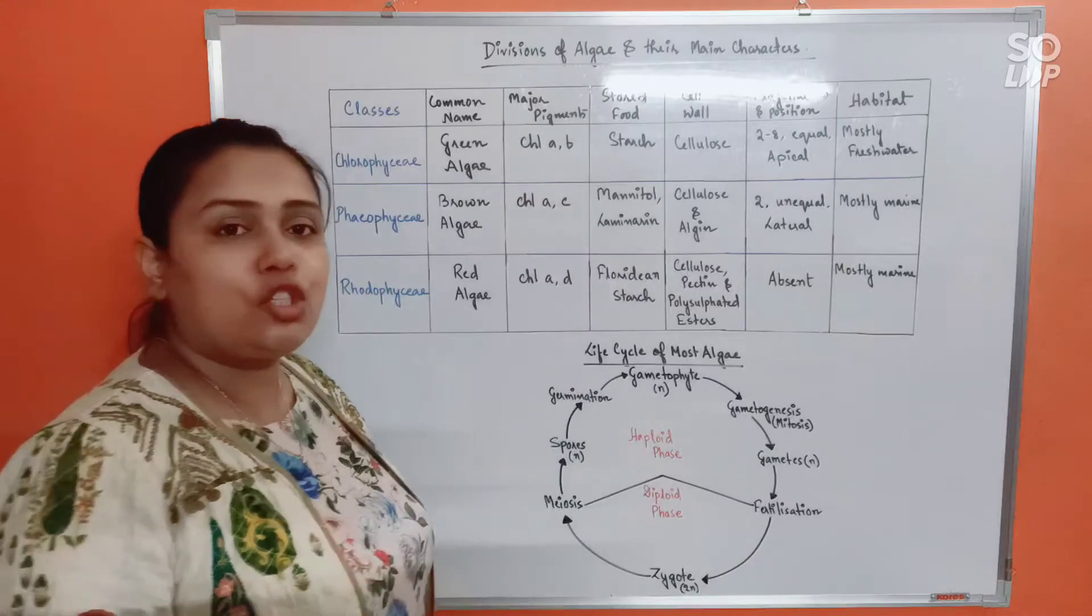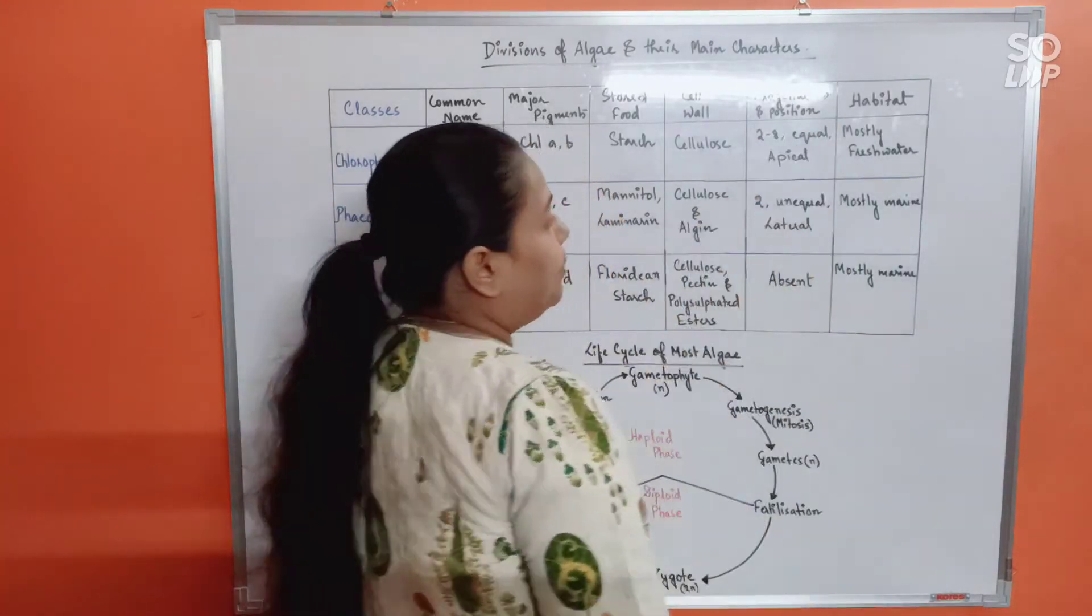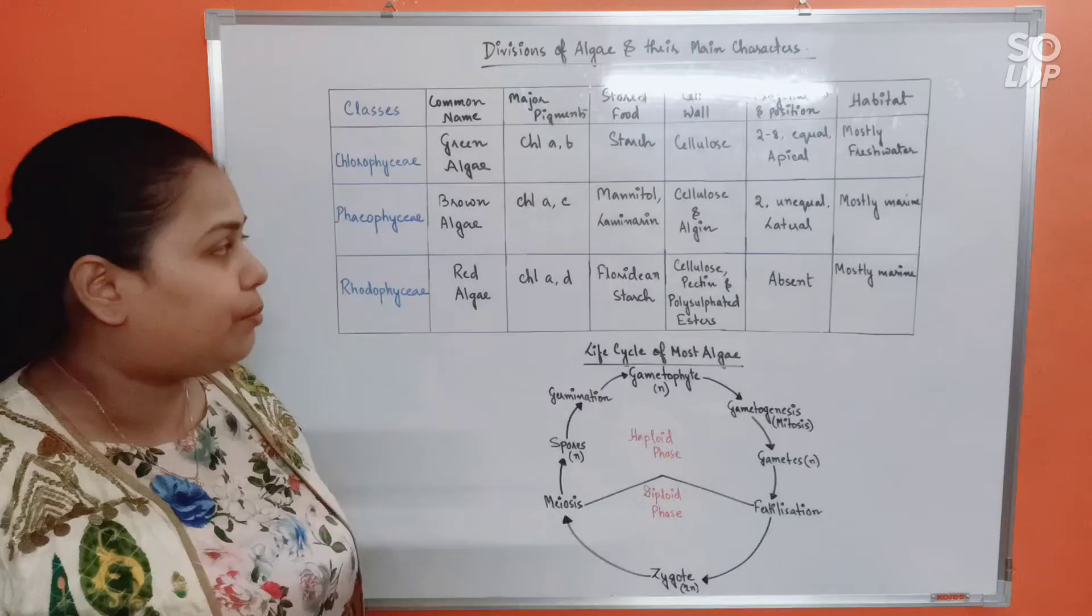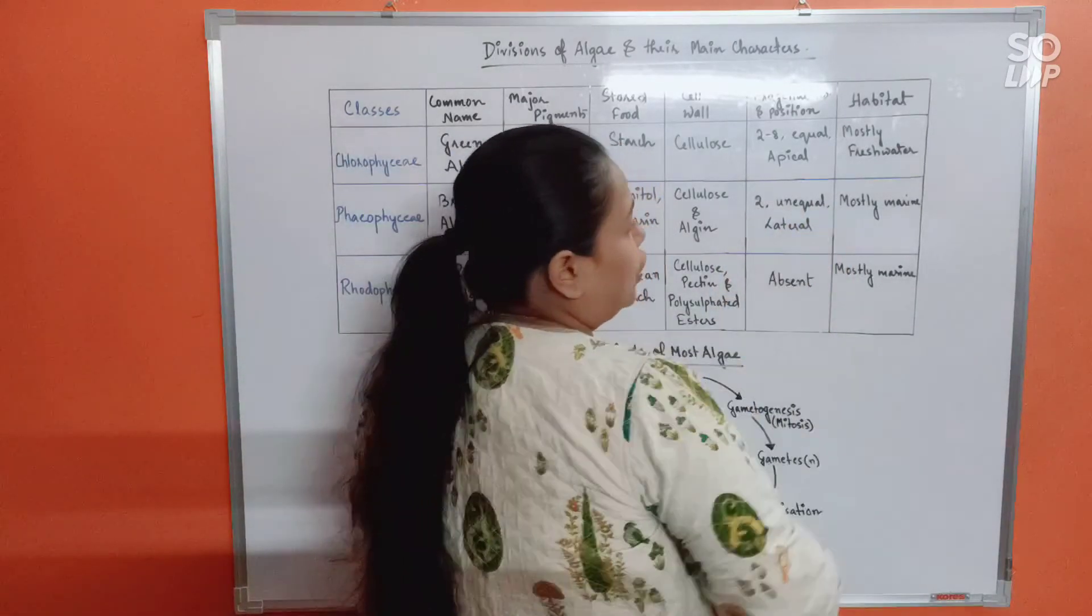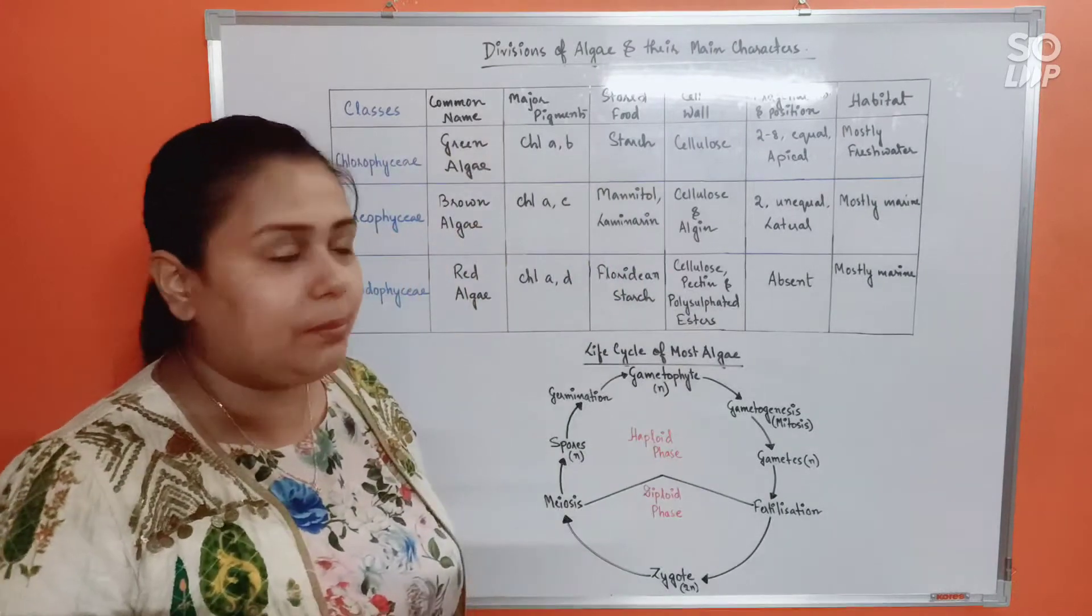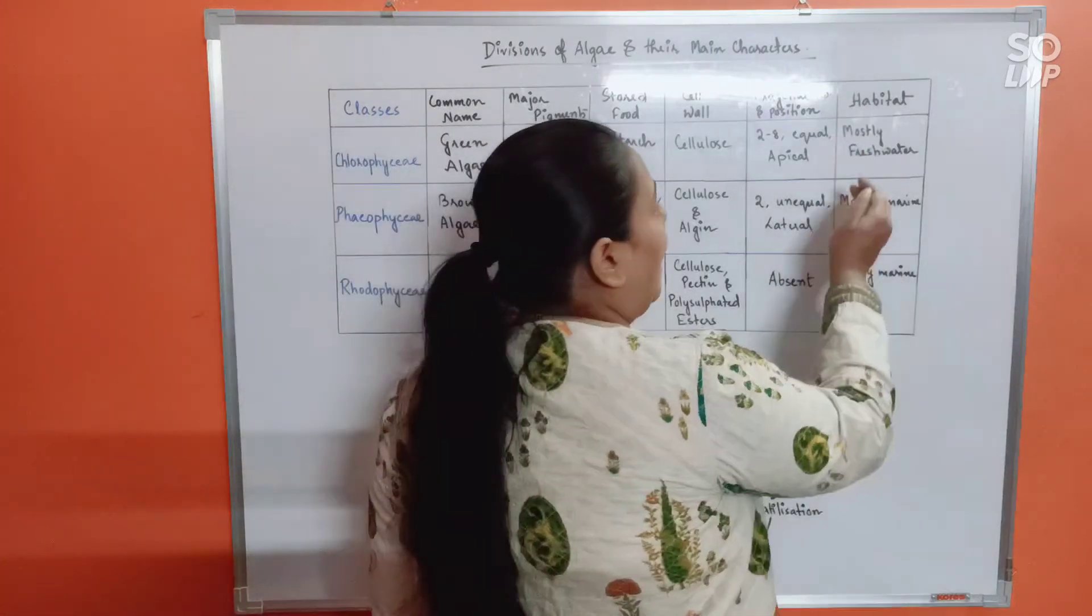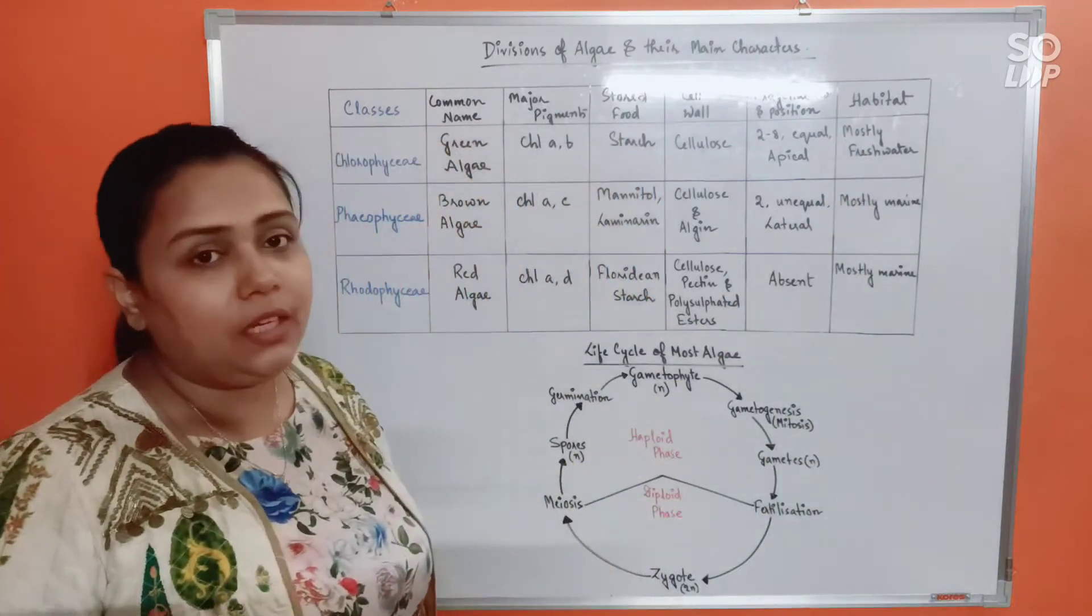Flagella number and position - first of all, flagella is present in the number of two. Both flagella will be unequal and laterally placed. Finally, habitat-wise they are mostly marine. Only very few, or rarely, would be freshwater.